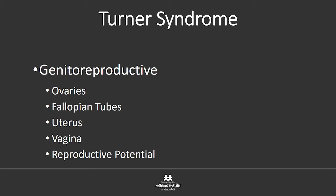Malrotation is along the same spectrum as horseshoe kidney — malrotated kidneys just didn't fuse. It's all part of the same anomaly. There's a higher risk for reflux, obstruction, and urinary tract infections, but nothing else specifically to do for it.